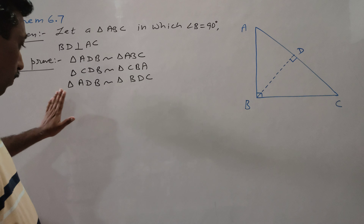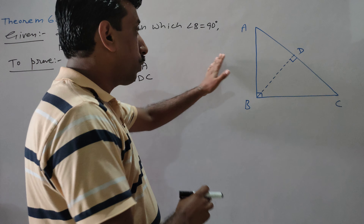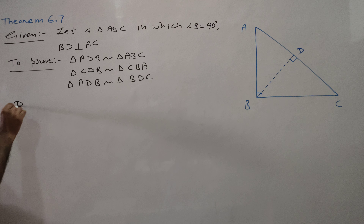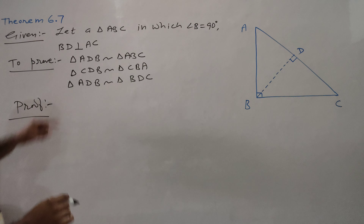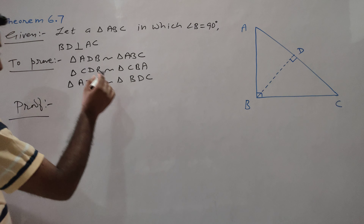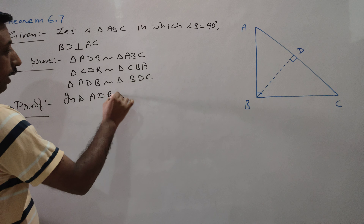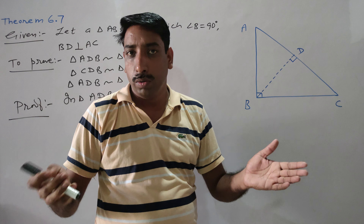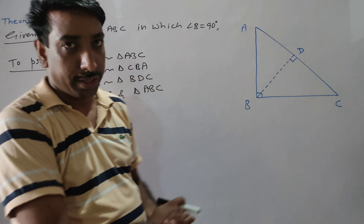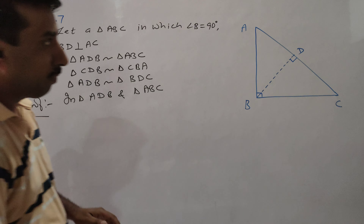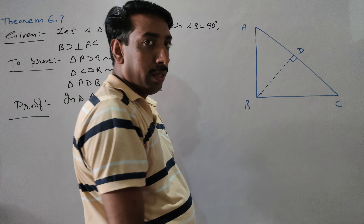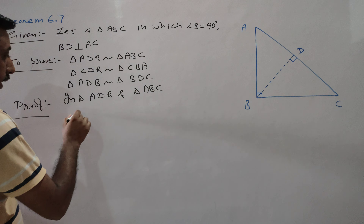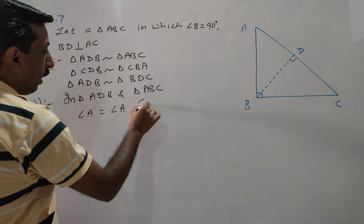We have to be careful about how to write the names of the triangles correctly. The first pair is triangle ADP and triangle ABC. Now, angle A is equal to angle A — that is common in the two triangles.